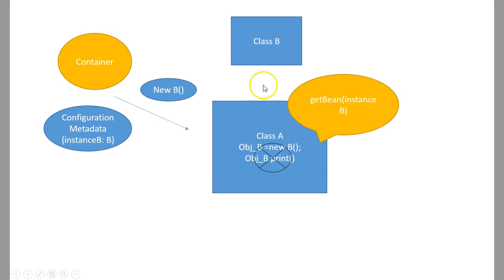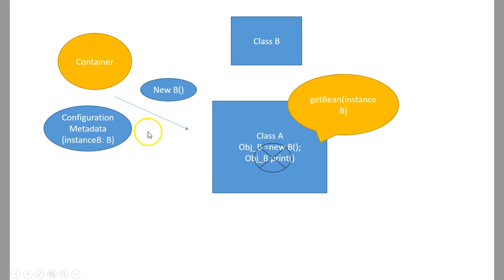This is how dependency injection enables loose coupling — class A is no longer tightly coupled with class B. In the future, if you want to change class B to class C, you just change the configuration to map instance B to class C. The container will then create an instance of C instead of B whenever class A asks for that dependency.